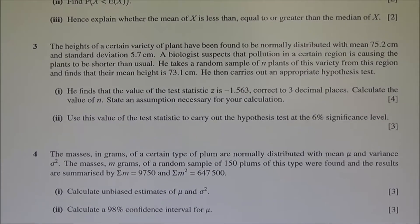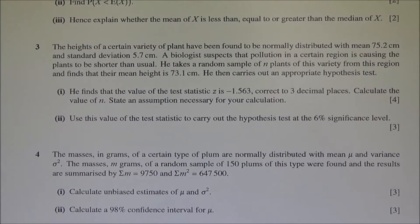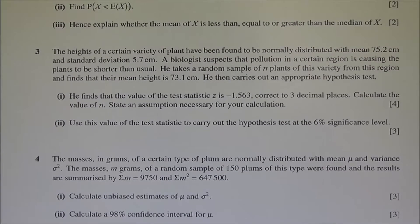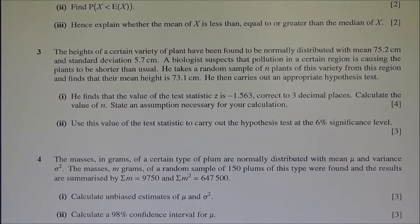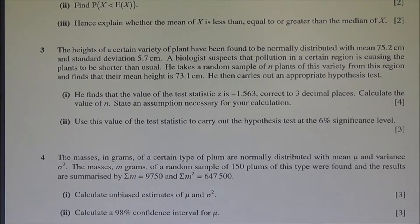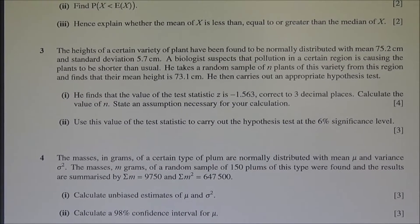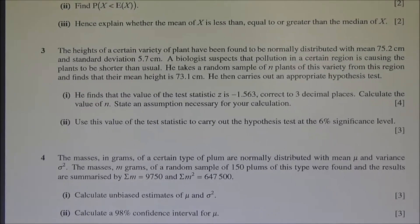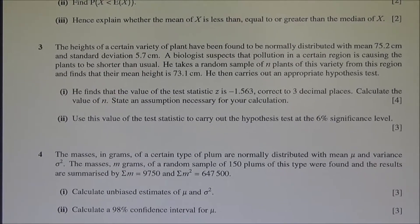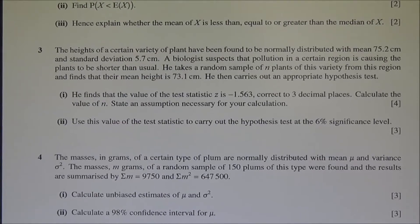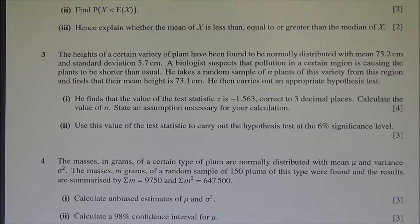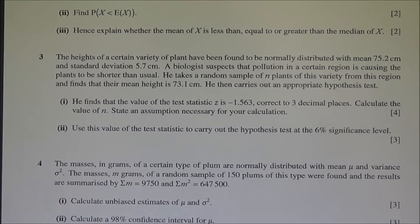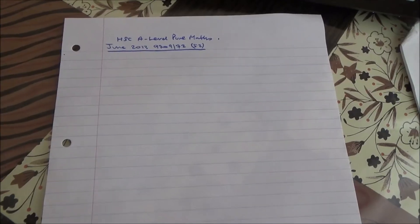He finds that the value of the test statistic Z is minus 1.563, correct to 3 decimal places. Calculate the value of n. Also, state an assumption necessary for your calculation. For the second part, use this value of the test statistic to carry out the hypothesis test at 6% significance level.